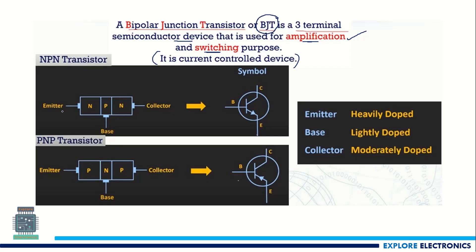Before going to that let us understand the physical structure of this BJT. There are two types of BJT: one is NPN type and another one is PNP type. In both types we will be having three regions. In NPN type we will be having two N regions with a P region in between. In PNP transistor two P regions are there with an N region in between.